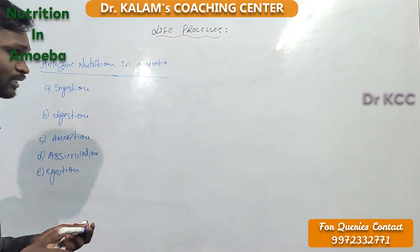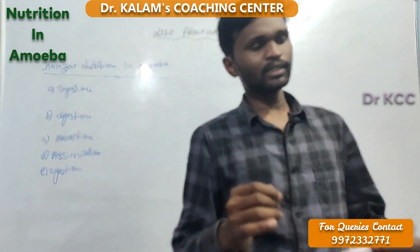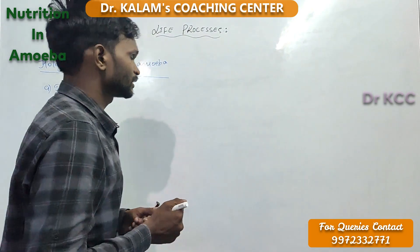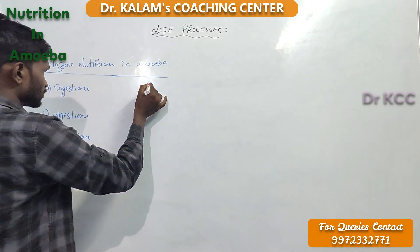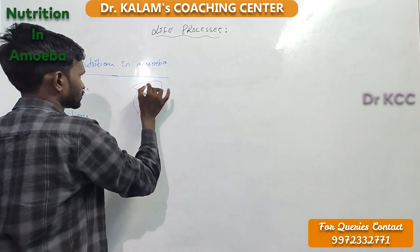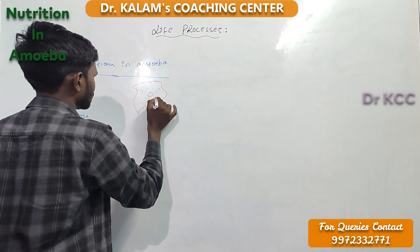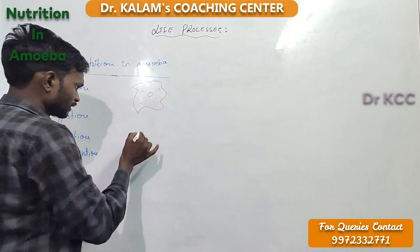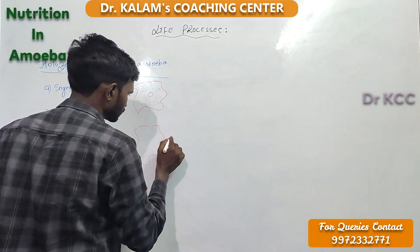Remember that amoeba is a shapeless creature. Second, amoeba is a unicellular organism — it has only one cell. Since it's a shapeless creature, I'm going to draw it now. Here is the nucleus, the cell membrane, and the cytoplasm. This is the structure of amoeba.